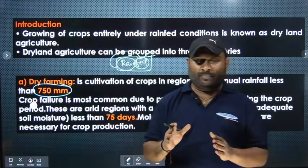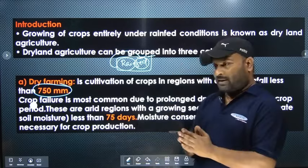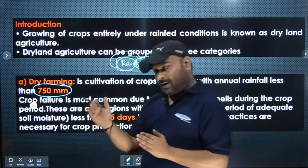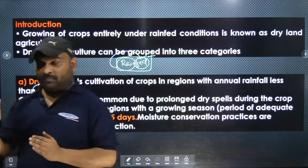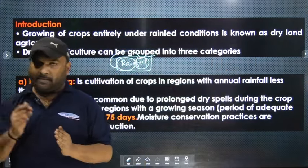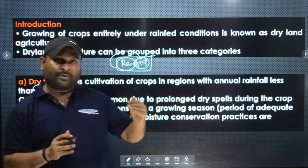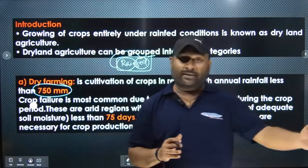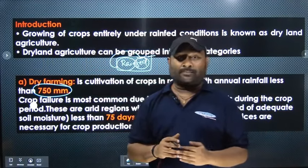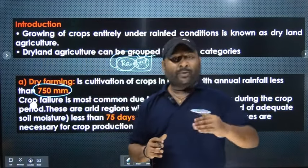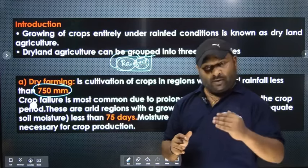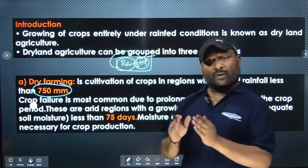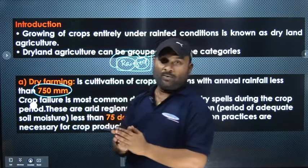So to summarize dry farming: it is practiced in the arid zone where annual rainfall is less than 750 mm. Crop failure occurs due to prolonged dry spells or drought. The growing season is less than 75 days, and we use soil water moisture conservation methods.